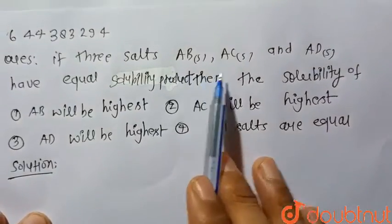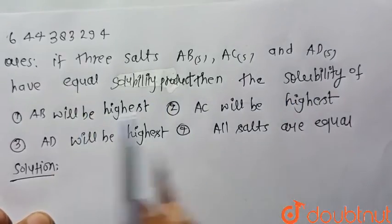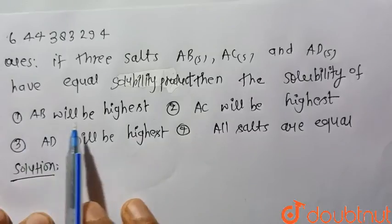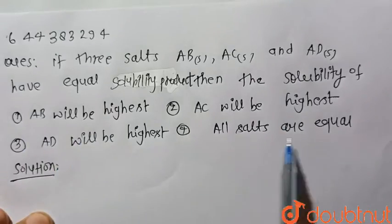Hello everyone, consider the given question: If three salts AB, AC, and AD have equal solubility product, then the solubility of first one AB will be highest, second AC will be highest, third AD will be highest, and fourth all salts are equal.